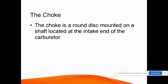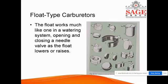The choke is a round disc mounted on a shaft at the intake end of the carburetor. In automobiles, especially during a cold start, we pull the choke so that the air supply is reduced and more fuel enters. With more fuel, the engine catches fire more easily and starts without difficulty.